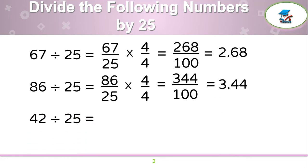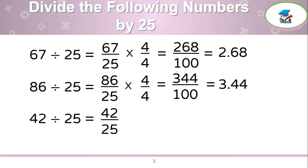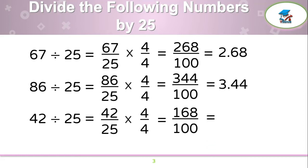One more example: 42 by 25. Write 42 over 25, which should be multiplied by 4 over 4. 42 times 4 is 168, and 25 times 4 is 100. So your final answer is 1.68.